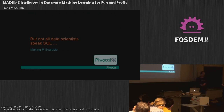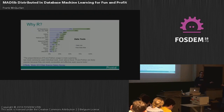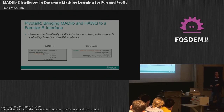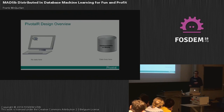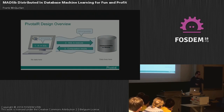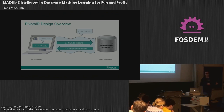Not every data scientist speaks SQL — many use R. So we've built an R interface for Madlib that allows you to use familiar R syntax on your client machine while actually calling the distributed MPP database in the back end for scale-out computation. You write regular R on the client, it converts to SQL, executes in the database where the data lives, and returns the result set back to the client. The big data stays in the database; only the results come back to the client.